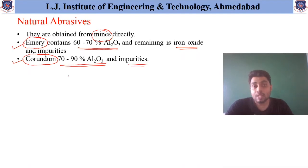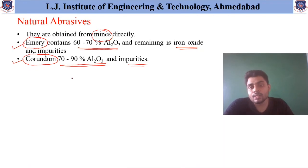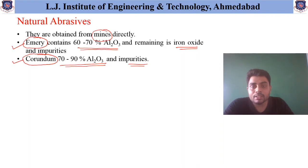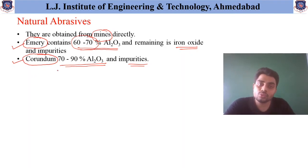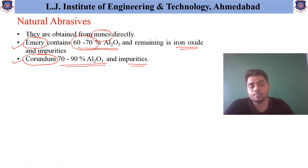The difference between emery and corundum is that these are naturally available materials. If the material has 60 to 70 percent of aluminum oxide, it is given the name emery, and if it is above 70 to 90 percent then it is called corundum.